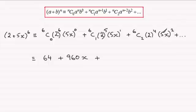So 6C2, 15 times 16 times 25, you should find you get 6,000. So you're going to get 6,000 and then you're going to have x squared.